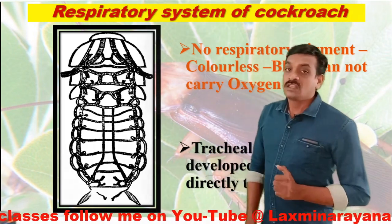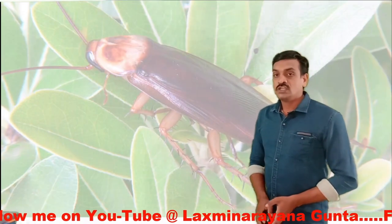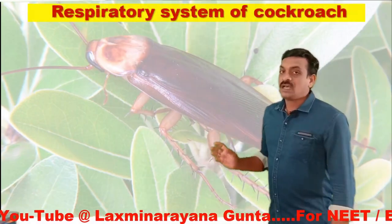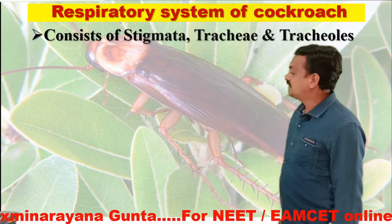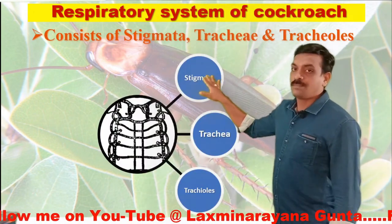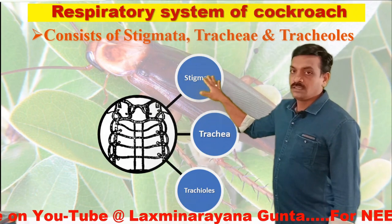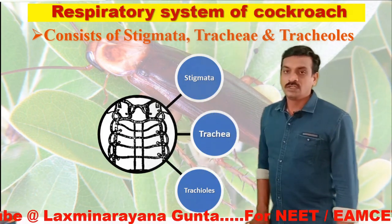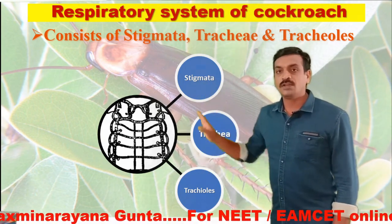The respiratory system of the cockroach consists of the spiracles, the trachea, and the tracheoles. Let us discuss all these things one by one.